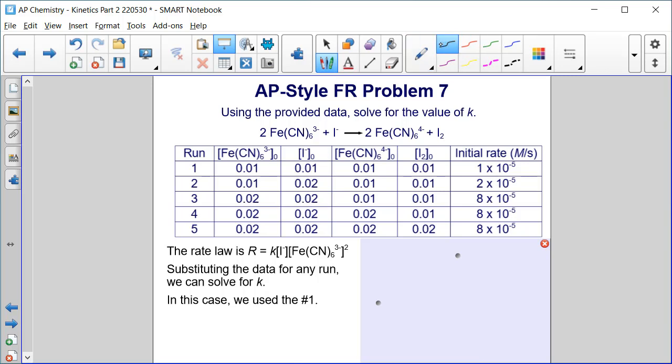From the previous slide, the rate law is K[I-][Fe(CN)6^3-]^2. We can substitute the data for any run to solve for K. In this case, we're going to use run one.